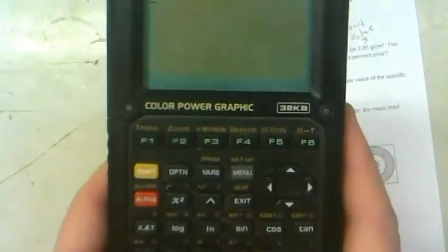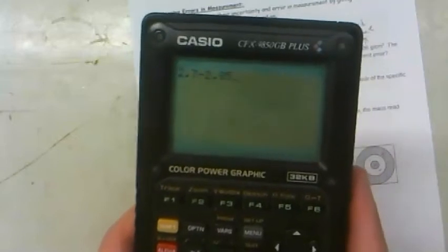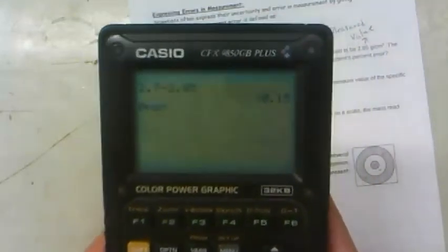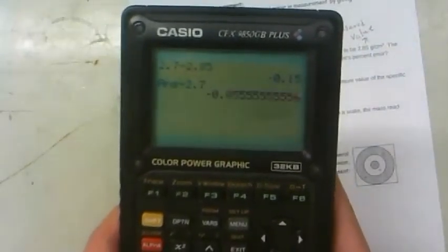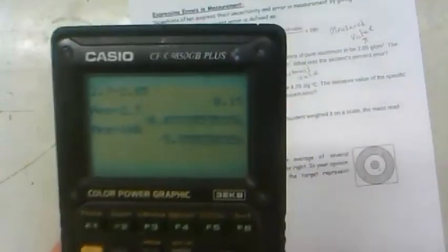If I put this in my calculator, I'm going to do it in a couple steps here. So I'm going to do the 2.7 minus 2.85, enter. There's our negative number, divided by 2.7, times 100. So we get 5.56 percent is what I would round that to.